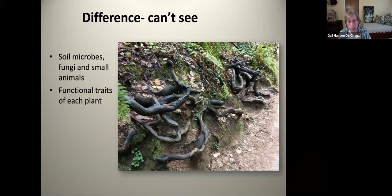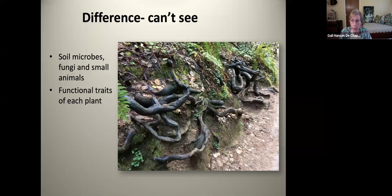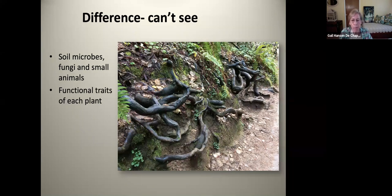There are also some differences you can't see, and a lot of that is below our feet in the soil. There's a huge number and variety of soil microbes, fungi, arthropods, and other small animals that live in soil that we don't normally see. There's also plant growth beneath the surface — this picture of a root mass of trees was taken on a hiking trail in John Muir Woods north of San Francisco. And the other thing you cannot see in plants is the functional traits. You really can't tell without long observation what insects or animals a plant will support, so for that you have to do a little research about the different plants.